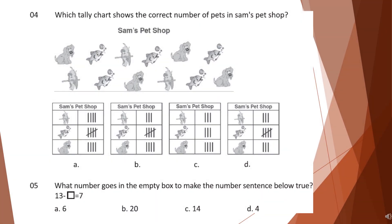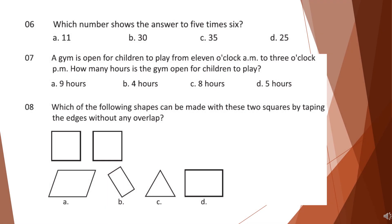Question 4: Which tally chart shows the correct number of pets in Sam's pet shop? Question 5: What number goes in the empty box to make the number sentence below true? Look at the given equation and choose your answer. Question 6: Which number shows the answer to 5 times 6? Question 7: A gym is open for children to play from 11 o'clock AM to 3 o'clock PM. How many hours is the gym open for children to play? Look at the options and choose your answer.